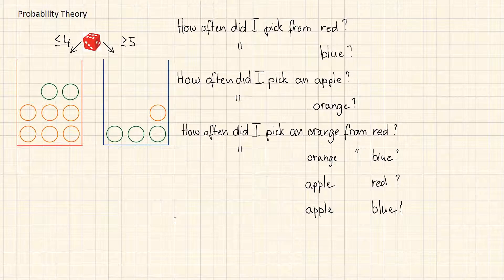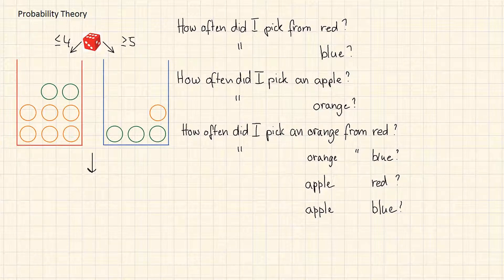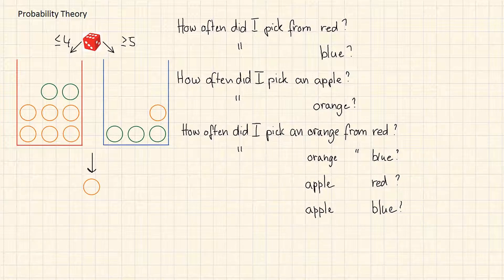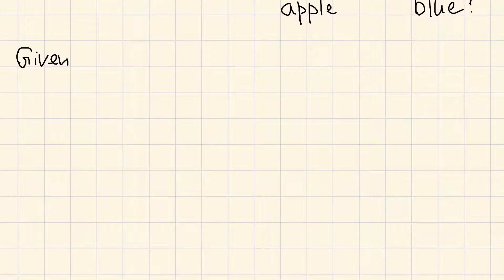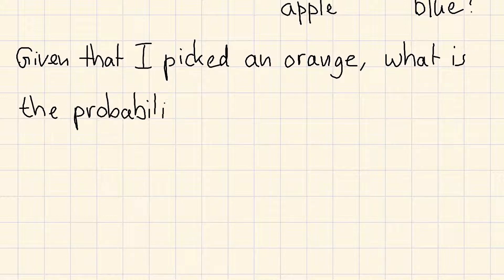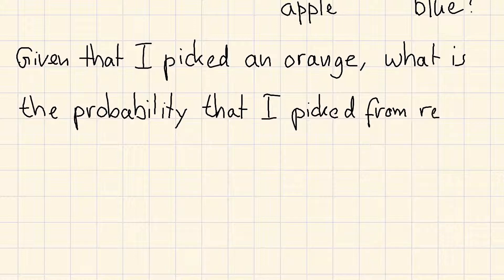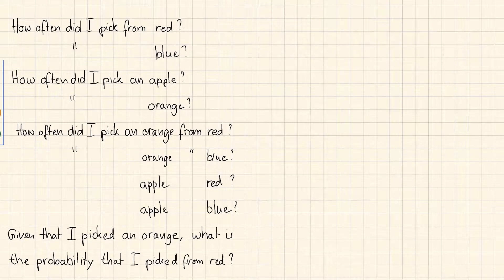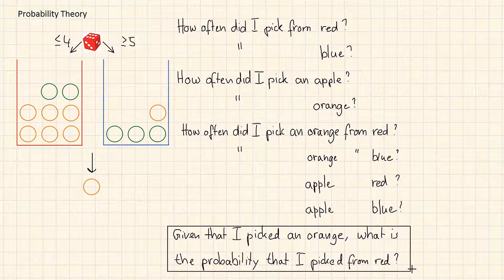These are a lot of questions which we will be answering in a moment. But let me draw your attention to one very special question — a question you may not have thought of in the first place. Let us assume I present you only a fruit, let's say an orange, but I don't give you the information from which box it was picked. The crucial question is: what is the probability that I picked the fruit from the red box? The process of generating the data point was hidden from you; you only see the data point, and you are trying to infer the process from the observation.